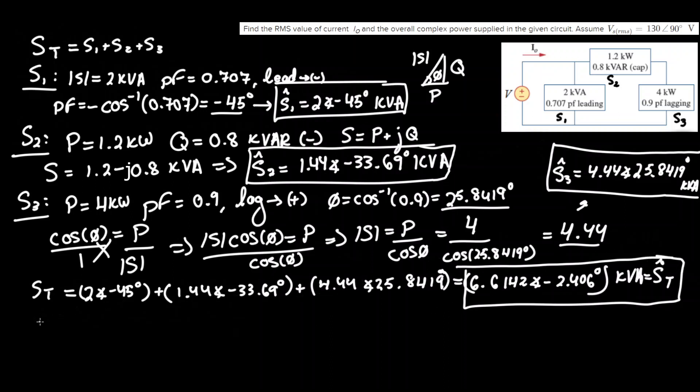So now to find I0 we need to use that formula: S, in this case S total, equals V times I complex conjugate.